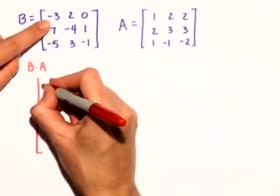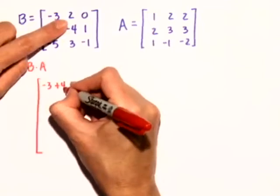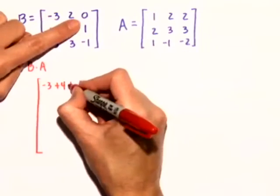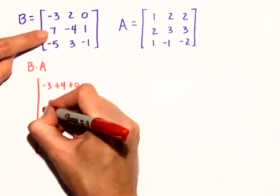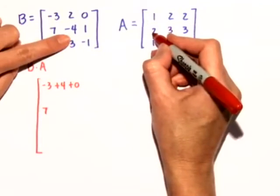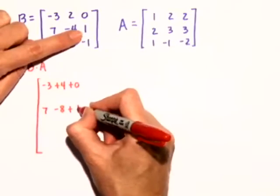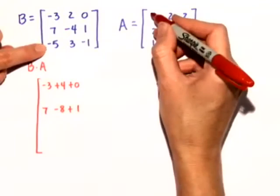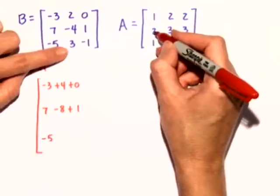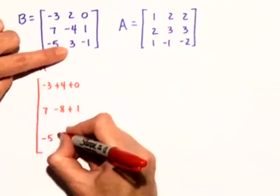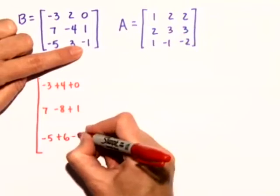Negative 3 times 1 is negative 3, plus 2 times 2 is 4, plus 0 times 1 is 0. Row 2 times column 1: 7 times 1 is 7, plus negative 4 times 2 is negative 8, plus 1 times 1 is 1. Row 3, column 1: negative 5 times 1 is negative 5, plus 3 times 2 is 6, plus negative 1 times 1 is minus 1.